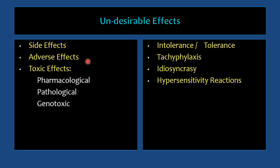Adverse effects are severe types of unwanted effects — for example, nausea, vomiting, diarrhea, bone marrow depression, and similar effects. Toxic effects are produced when drug levels are increased above normal therapeutic levels to toxic levels. Pharmacological toxic effects are the exaggeration of therapeutic effects due to toxic drug levels.